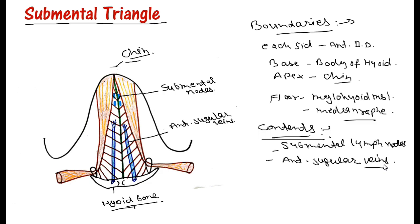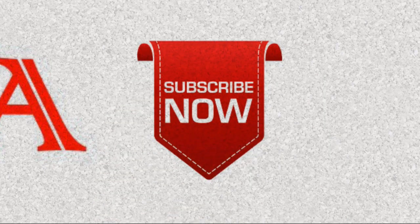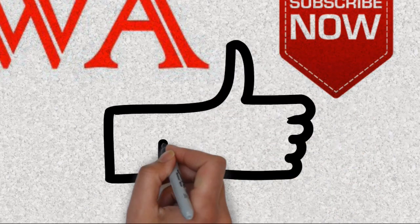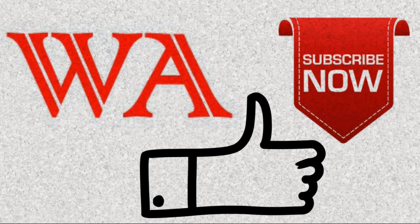And the last structure is the roof. The roof is formed by the investing layer of the deep cervical fascia.